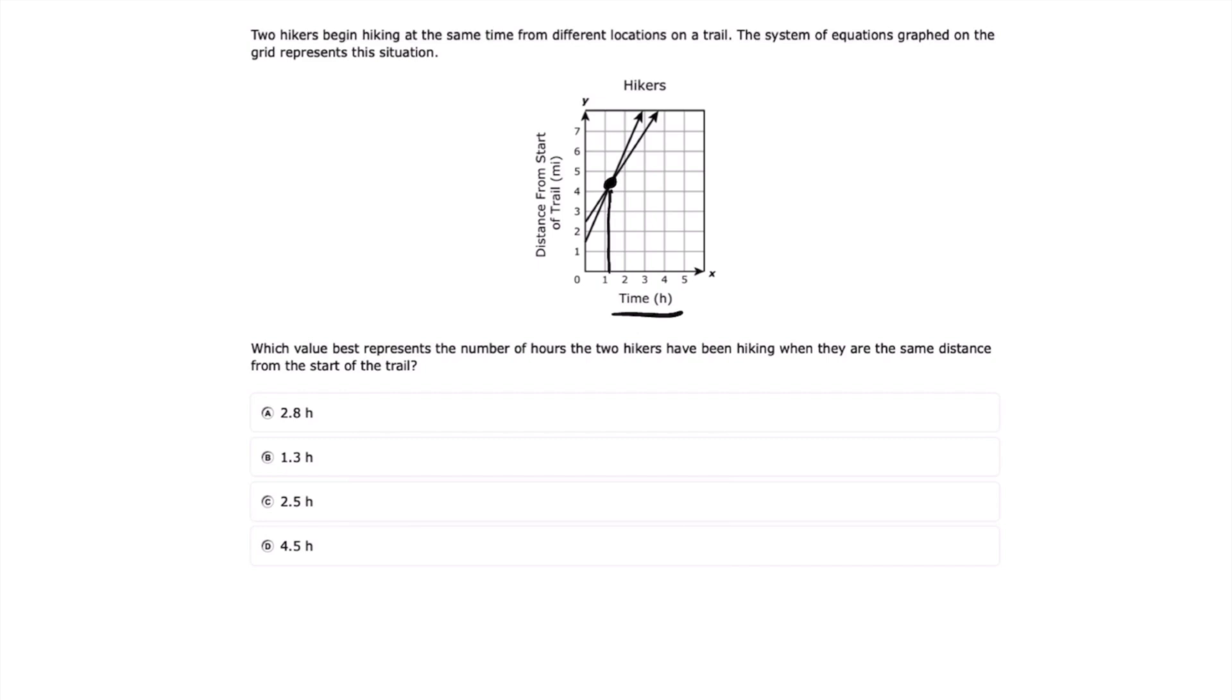And so we can see that it's between one and two, a little bit closer to one. And just by looking at our answer choices, we can use some common sense and say that our answer choice has to be 1.3 hours. And that looks to be pretty close to our graph.